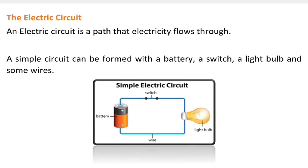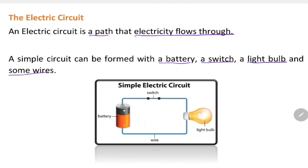Let's look at the electric circuit. Electric circuit is a path which electricity flows through. A simple circuit can be formed with a battery, switch, light bulb, and some wires. If you look at this picture below, you will see a battery, switch, wire, and a light bulb. That is called a simple electric circuit.